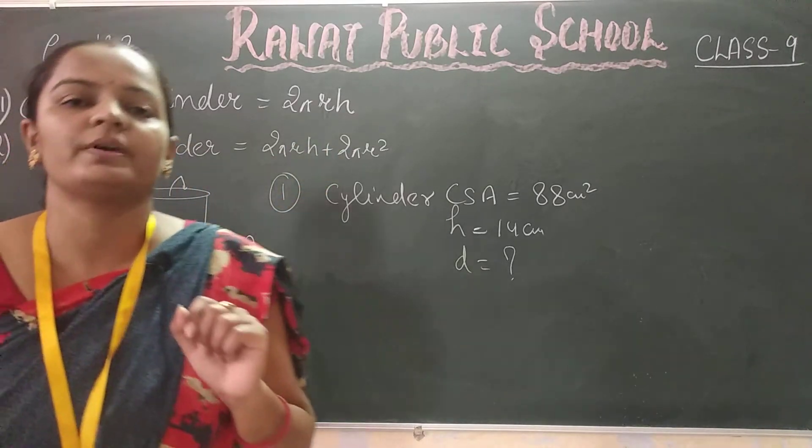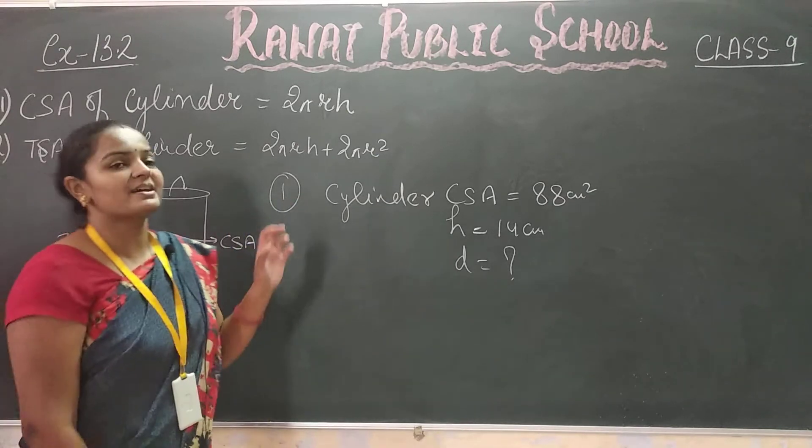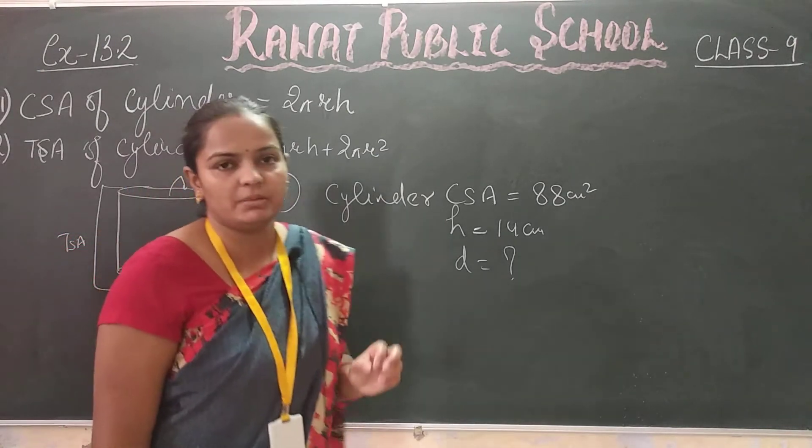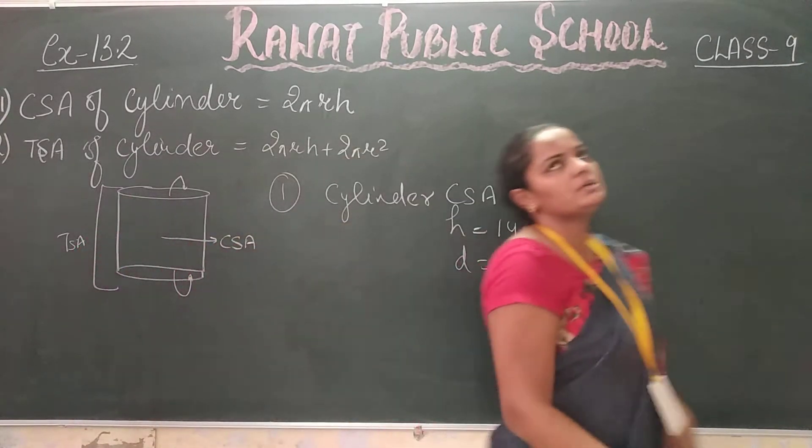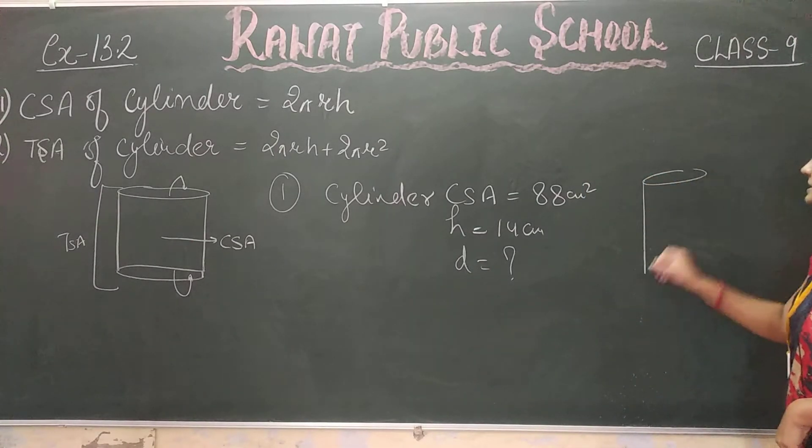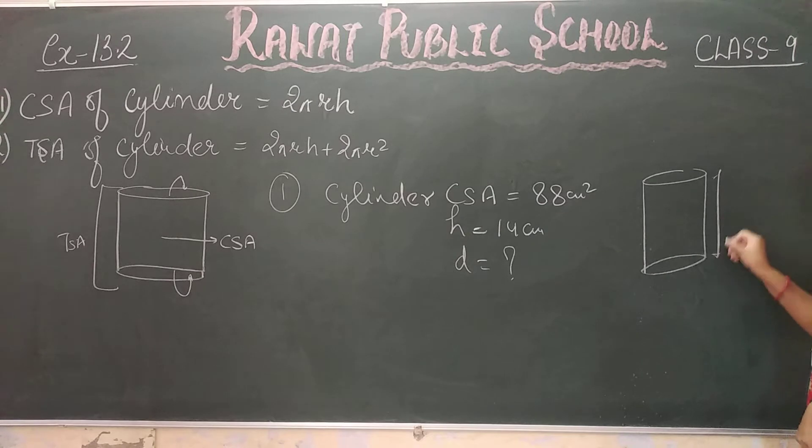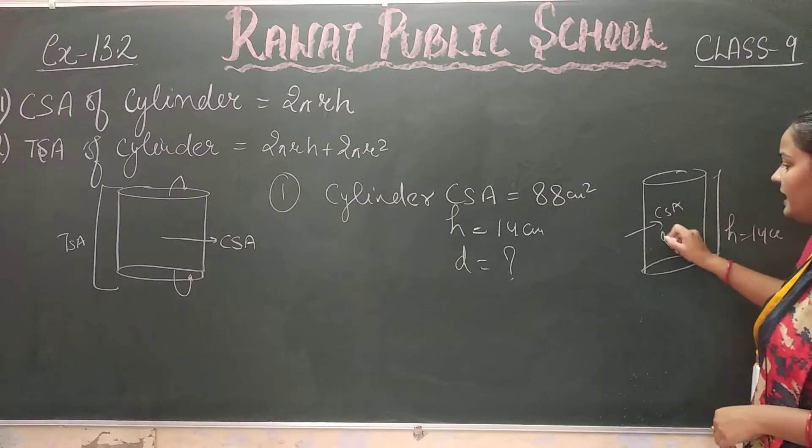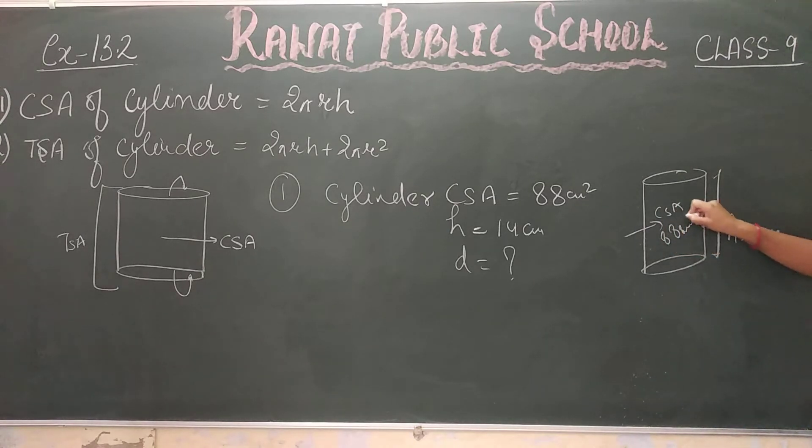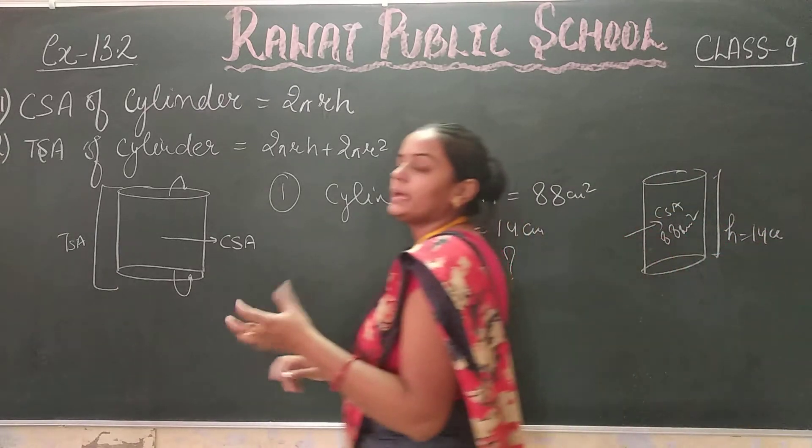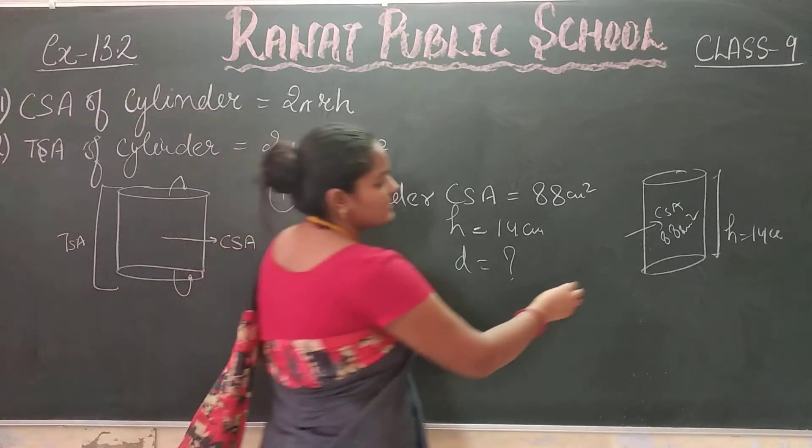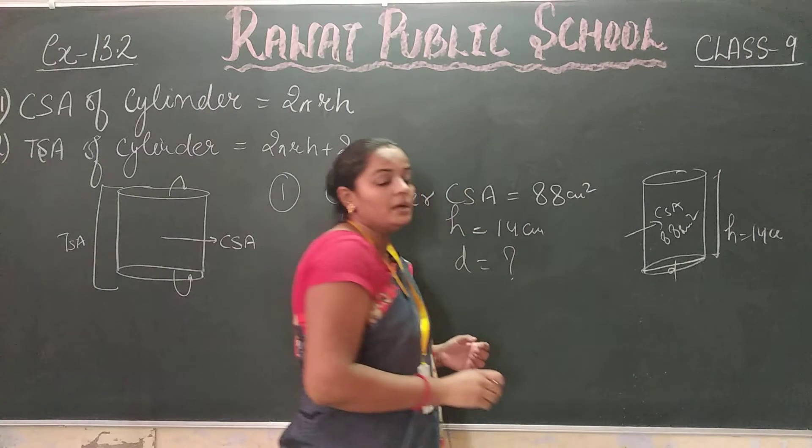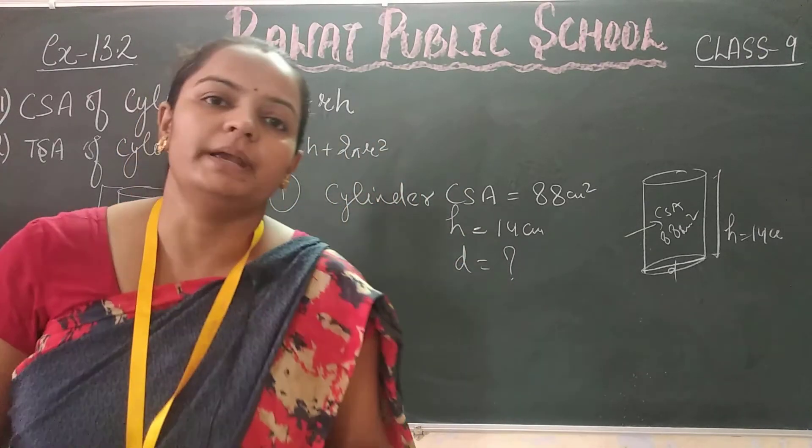Now I will take question number 1, which is 13.2. Question number 1: CSA of cylinder is 88 cm squared and height given is 14 cm. We need to find diameter D.